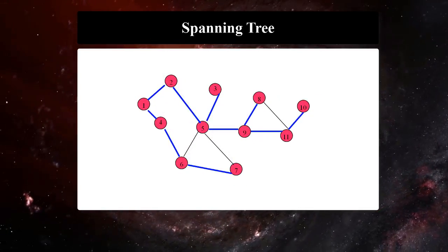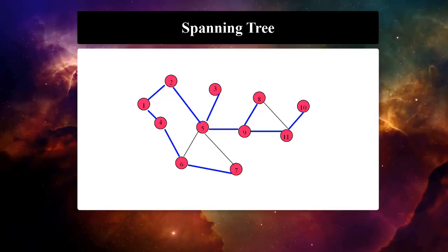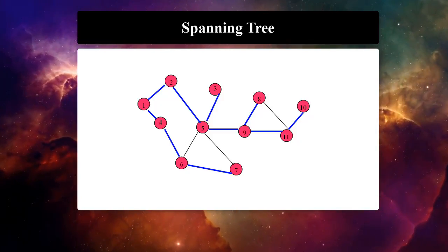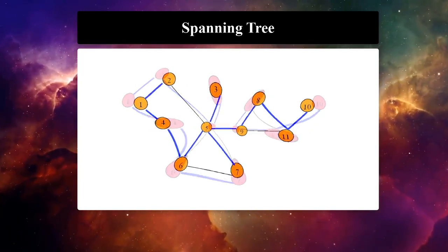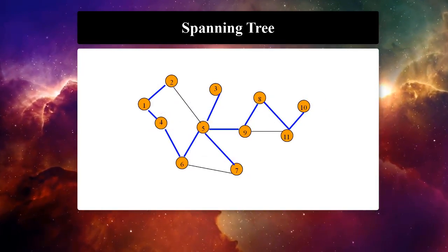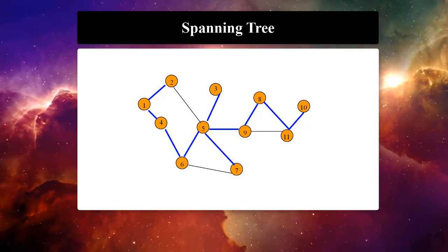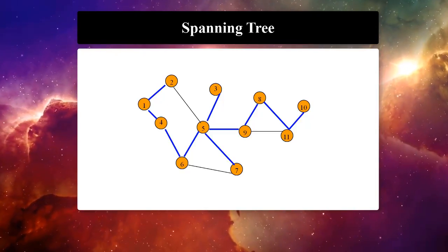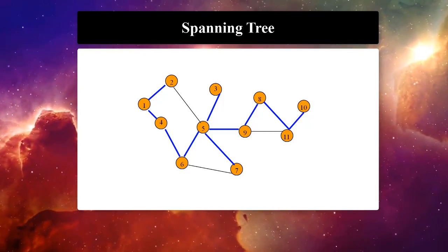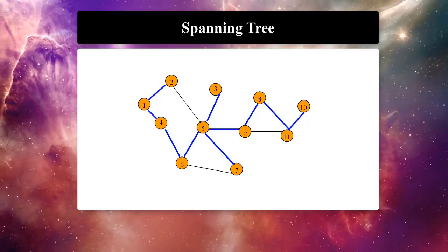Here is one spanning tree of the graph. Here is another spanning tree of the same graph. Prim's algorithm and Kruskal's algorithm are often used to construct a spanning tree. They are greedy algorithms that run in polynomial time.